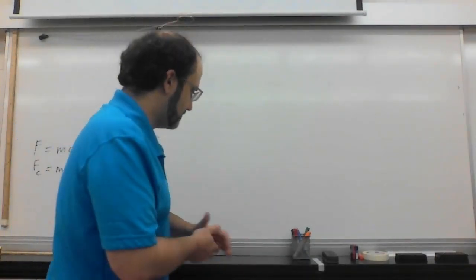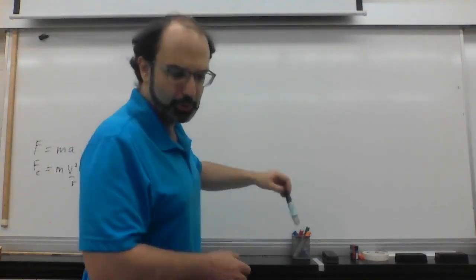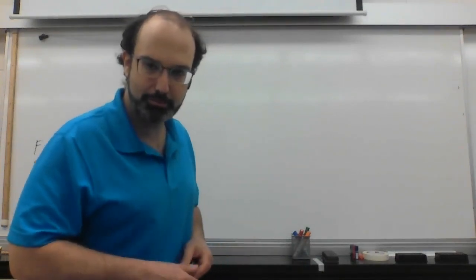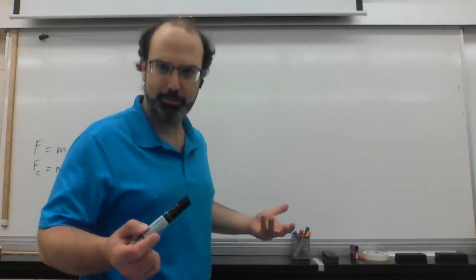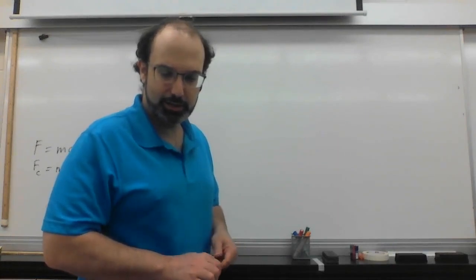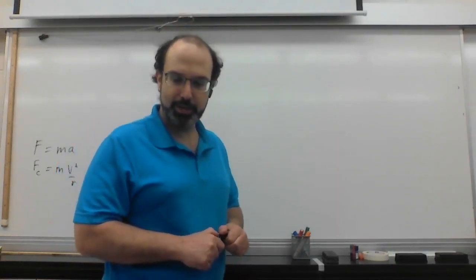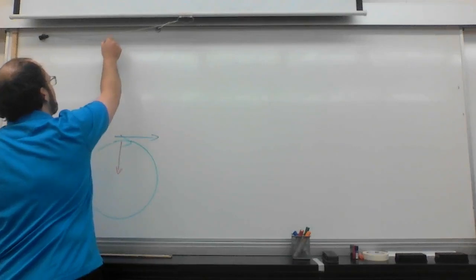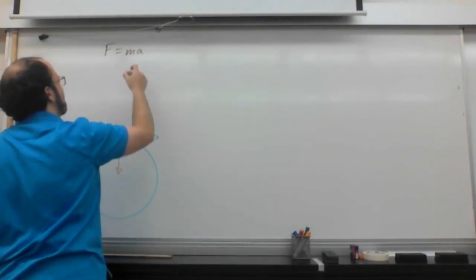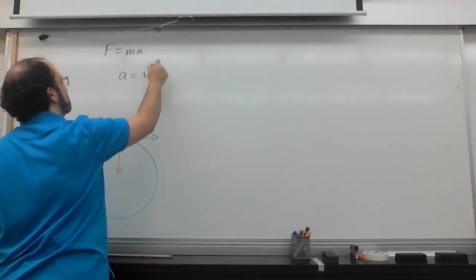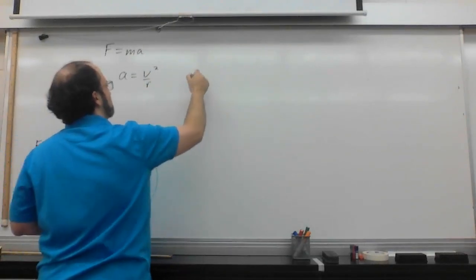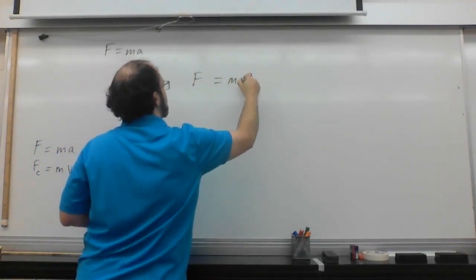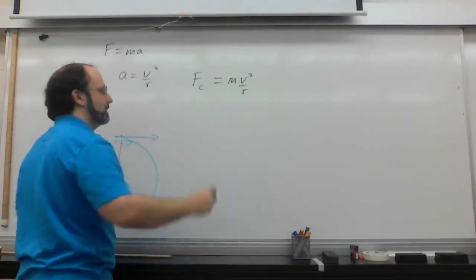Looking at the notes: Newton's law says that any mass that experiences acceleration must be affected by a force. Newton's second law states that F equals ma. In circular motion, a equals v squared over r. So F equals mv squared over r. That's it — and we call that force centripetal.